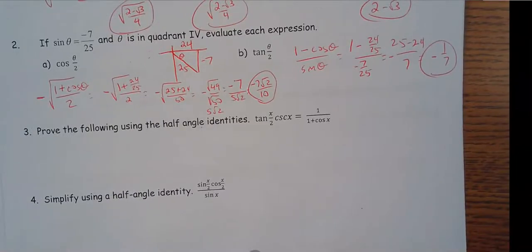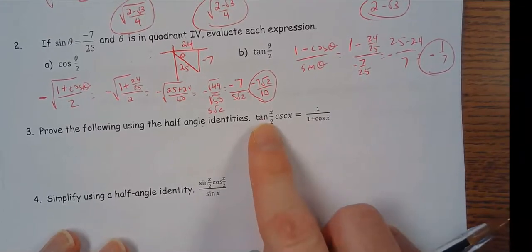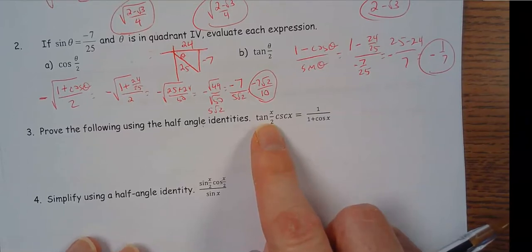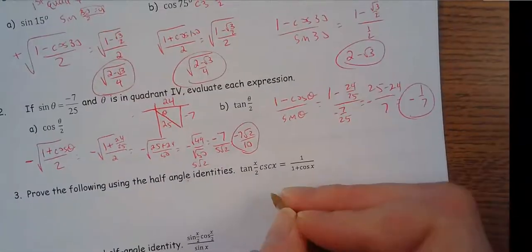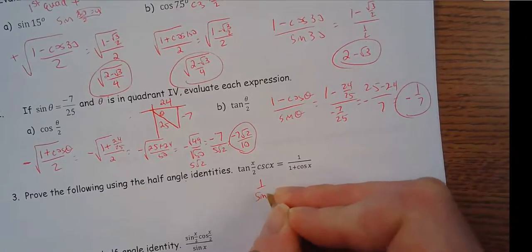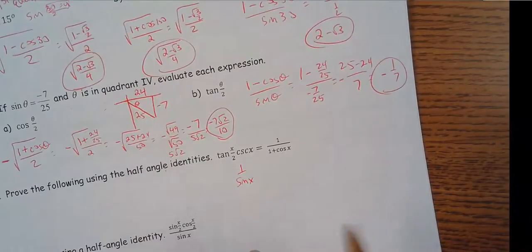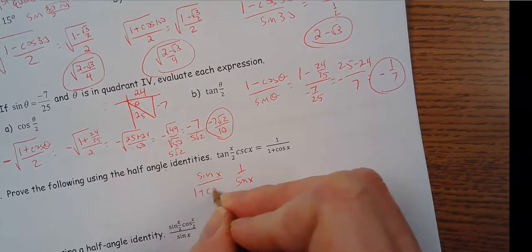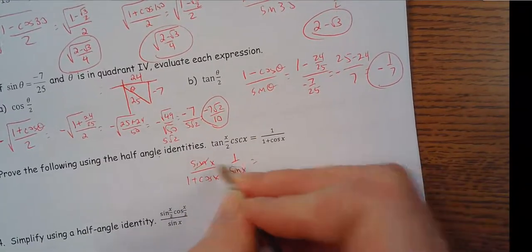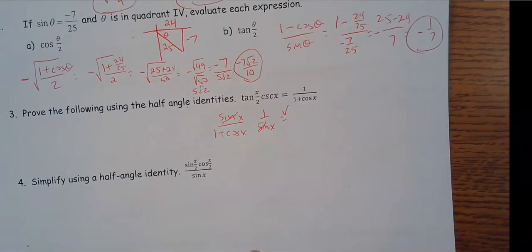Number 3: prove the identity using the half angle. For tangent of x/2, I've got options for which form to use. Since cosecant is 1/sine x, I'd love to cancel out that sine on the bottom, so I'm going to use the form with sine on top: sine x / (1 + cosine x). Those cancel, giving 1 / (1 + cosine x), which is exactly what I'm trying to verify — that one went a lot easier than I thought.